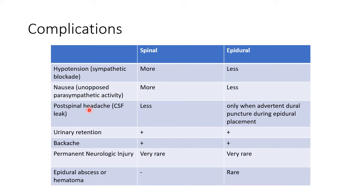Post-spinal headache can occur due to CSF leak. It is less common in spinal anesthesia and occurs only when there is inadvertent dural puncture during epidural placement in epidural anesthesia. Urinary retention and backache are common in both procedures. Permanent neurologic injury can occur very rarely, and epidural abscess or hematoma can occur rarely during epidural anesthesia.